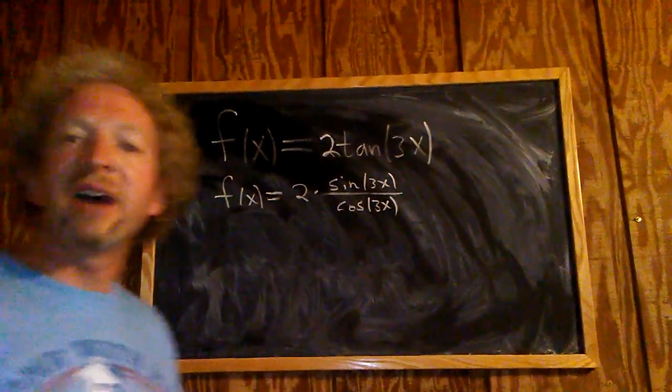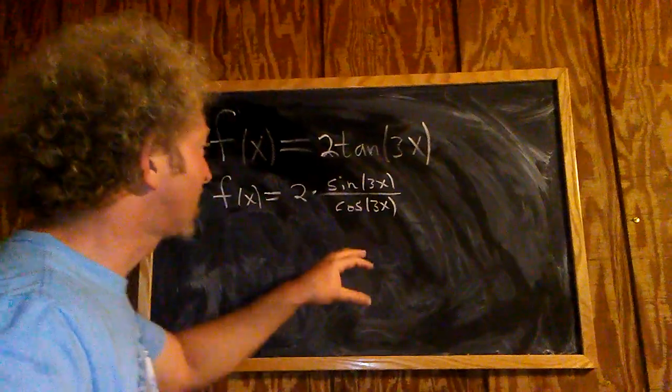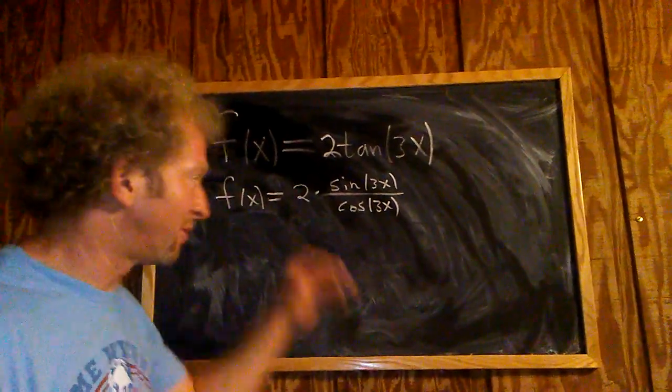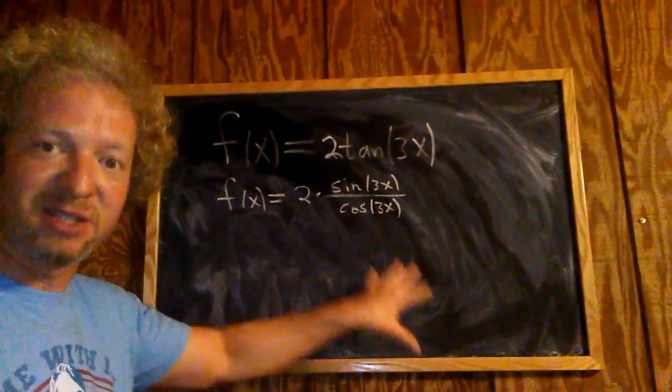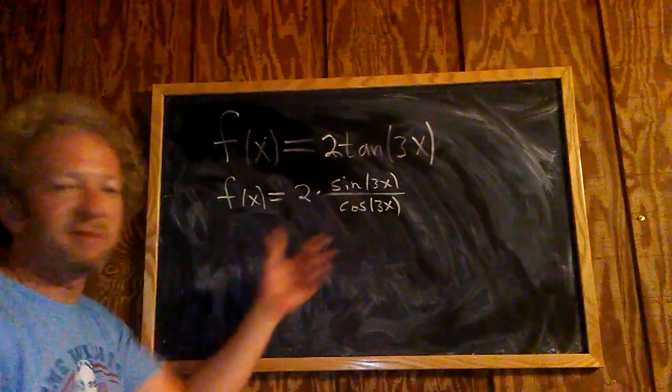This function is going to have vertical asymptotes whenever it's undefined. That's going to happen when the bottom is equal to zero. In other words, whenever cosine of 3x is equal to zero. So now we simply set the bottom equal to zero.